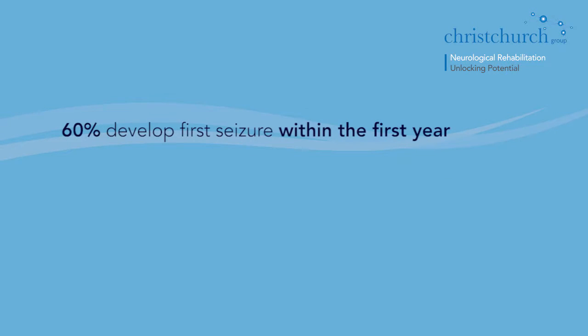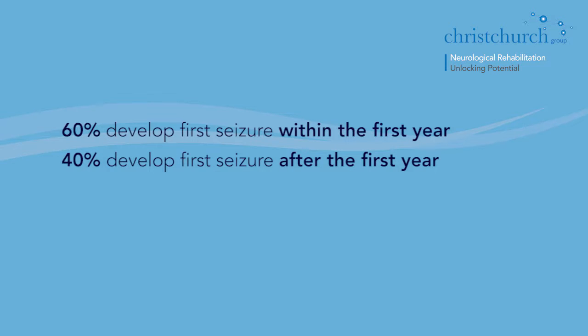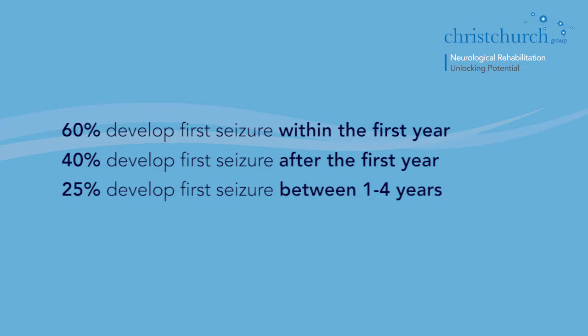The important thing to remember is that those who develop epilepsy after brain injury — about 60% have developed that seizure within the first year, as you might expect. But surprisingly, that means 40% develop their first seizure after one year: about a quarter between one to four years, and 16% still develop their first seizure after a brain injury over four years later, which is perhaps surprising.